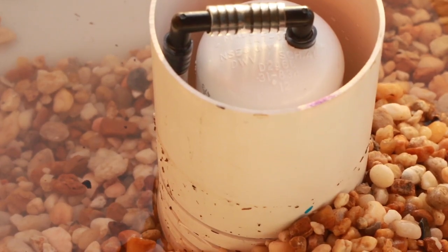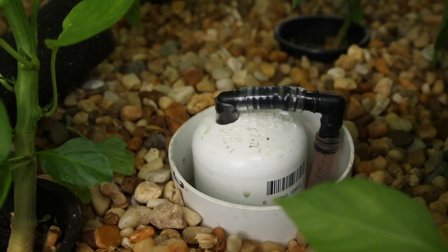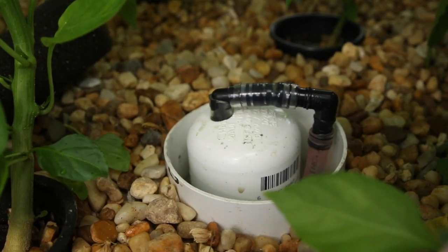The bell siphon regulates the flow of water out of the grow bed and controls the ebb and flow cycle.